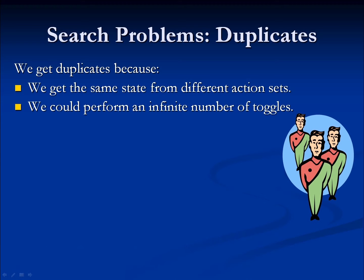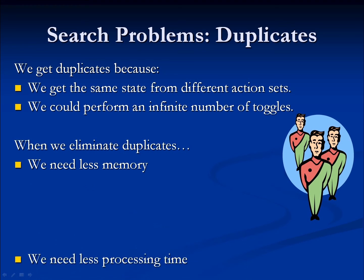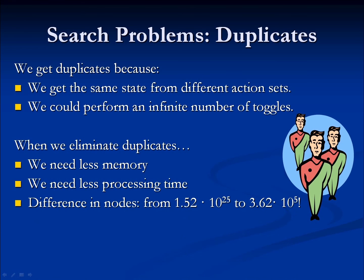We took totally different actions, but we started in the same place and we ended in the same place. This is very common, not just in path planners, but in all types of well-defined problems that we might use search to attack. When we can eliminate duplicates, we drastically reduce the amount of memory and processing time needed to solve the problem — we go from 1.52 times 10 to the 25 to 3.62 times 10 to the 5. That's 20 orders of magnitude, which alone is a huge difference.